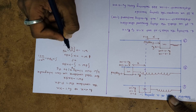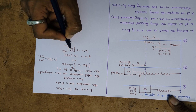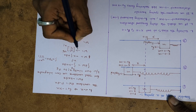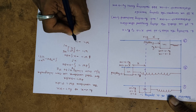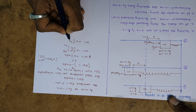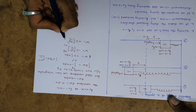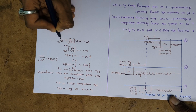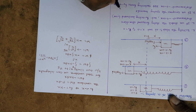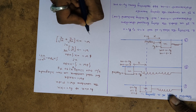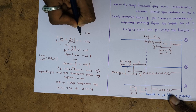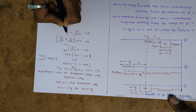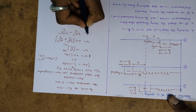Substituting the limits — first the final displacement and then minus the initial displacement — the net work done W equals minus k times x_f squared over 2, and minus of minus gives plus x_i squared over 2. Rearranging, the net work done equals k x_i squared over 2 minus k x_f squared over 2.